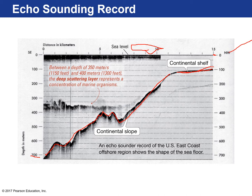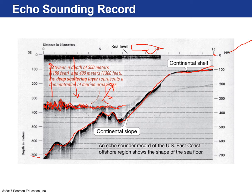One problem with echo sounding is that between a depth of about 350 and 400 meters there was something called the DSL, or Deep Scattering Layer. These black lines gave a false bottom reading — the sound waves were interacting with something and bouncing back. What this is, is a group of organisms that during the daytime sink down to really deep layers and at night rise back up to avoid predation. Because they're in such large numbers, they actually affect the data from echo sounding.